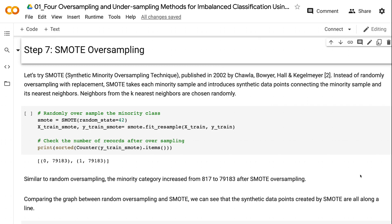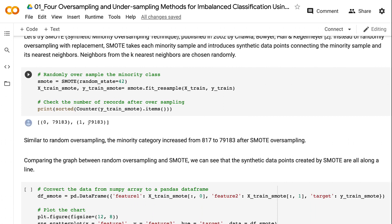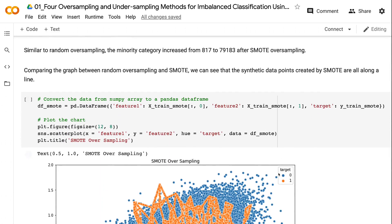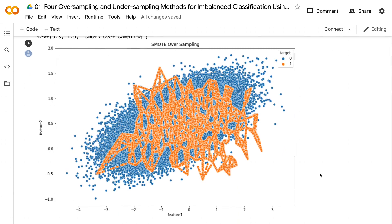Neighbors from the k-nearest neighbors are chosen randomly. Similar to random oversampling, the minority category increased from 817 to 79,183 after SMOTE oversampling. Comparing the graph between random oversampling and SMOTE, we can see that the synthetic data points created by SMOTE are all along a line.